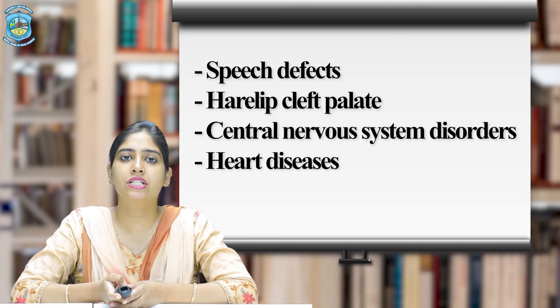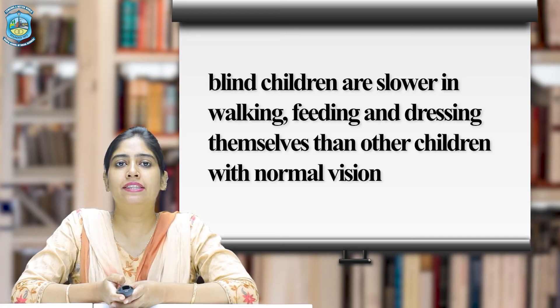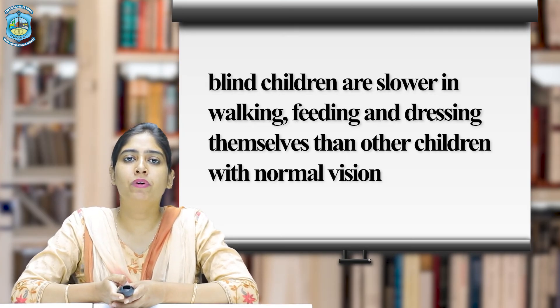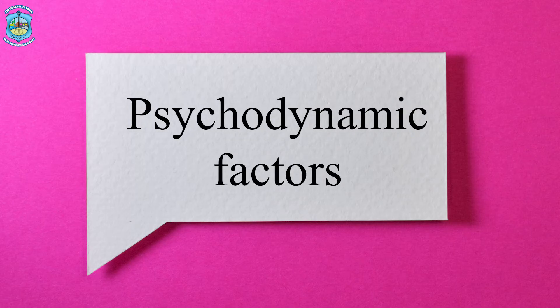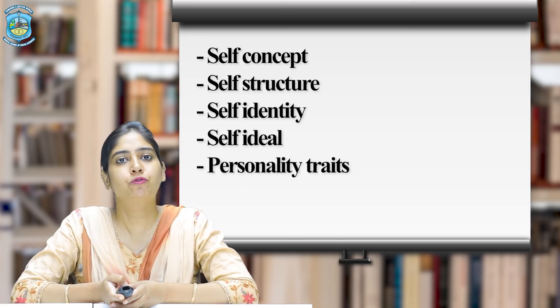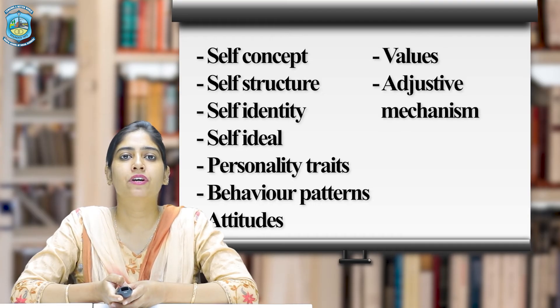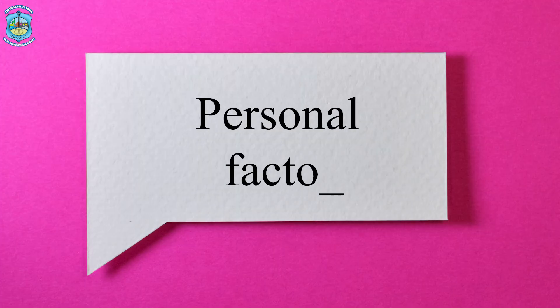Physical defects place limitations on the child's ability to deal with the environment. The most common physical defects among children are visual and auditory impairments, orthopedic disabilities, speech defects, harelip, cleft palate, central nervous system disorders and heart diseases. Some of these are congenital while some are the result of illness or accident. The developmental progression of these children is usually below that of normal children. For instance, blind children are slower in walking, feeding and dressing themselves than children with normal vision.